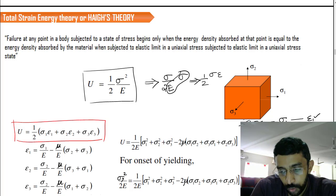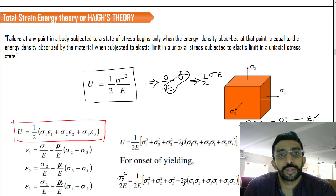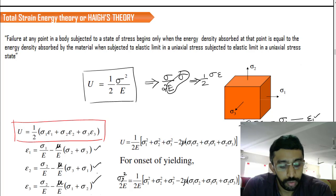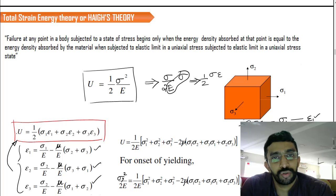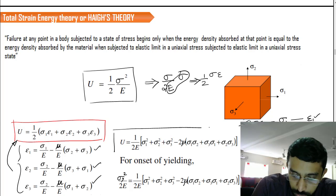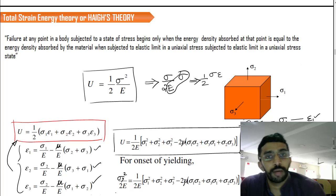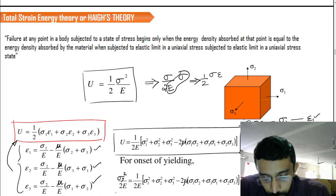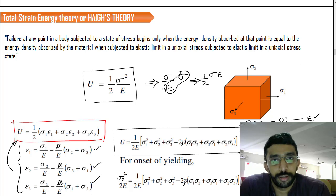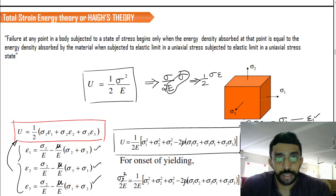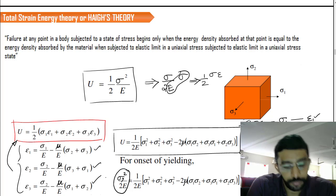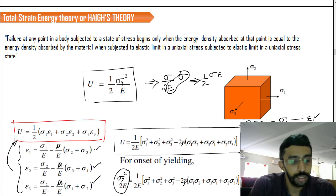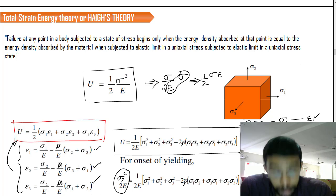To calculate ε₁, ε₂, and ε₃, we use the standard strain equations. Substituting these into the total strain energy equation and rearranging, we get: u = (1/2E)[σ₁² + σ₂² + σ₃² − 2μ(σ₁σ₂ + σ₃σ₁ + σ₂σ₃)]. This is compared with the strain energy at the yield value, which is σ_y²/2E. Cancelling 2E from both sides gives the failure criterion equation.